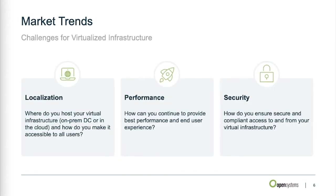For virtualized infrastructure in particular, there are three main challenges. First, localization: where do you host your virtual infrastructure — still on-premise, or have you moved part of it to the cloud? If so, what's the model — SaaS, or a lift-and-shift to Azure or AWS? How do you expect users to access it — over WAN infrastructure or directly over the internet? There are many questions around where you host your infrastructure and how it's made accessible to users.